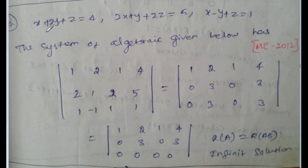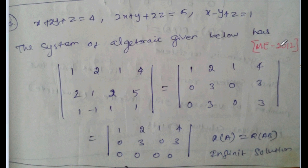x plus 2y plus z equal to 4, 2x plus y plus 2z equal to 5, x minus y plus z equal to 1. This system of algebraic equations is from Mechanical Engineering 2012. Set the augmented matrix: [1, 2, 1 | 4], [2, 1, 2 | 5], [1, -1, 1 | 1].